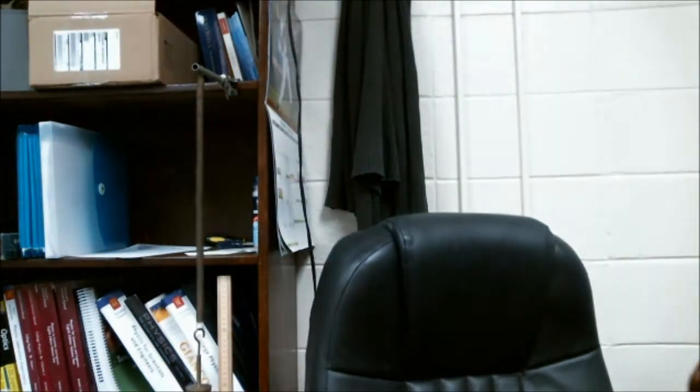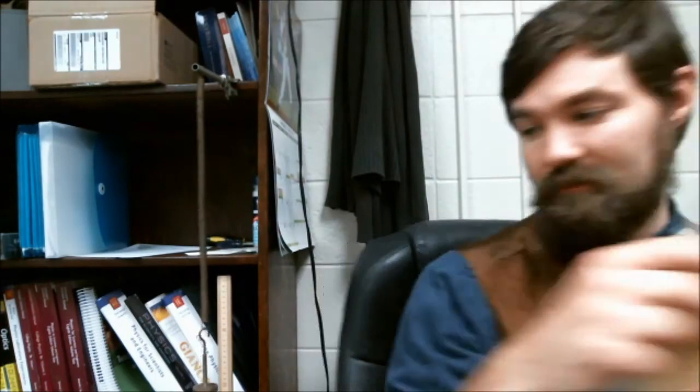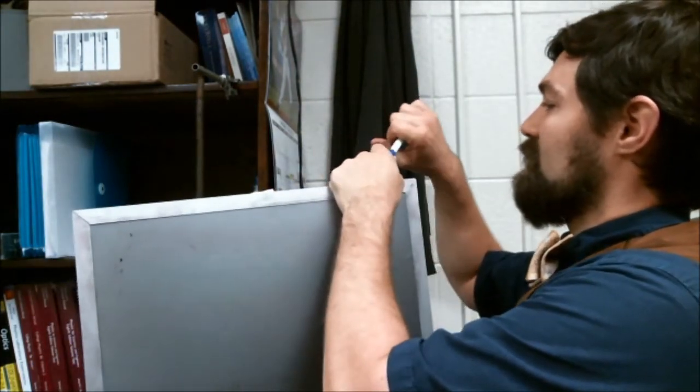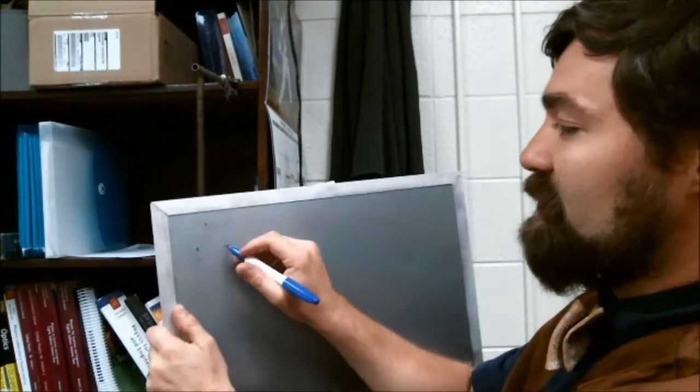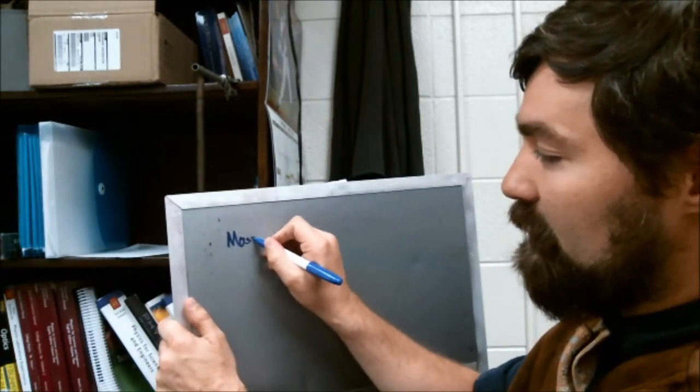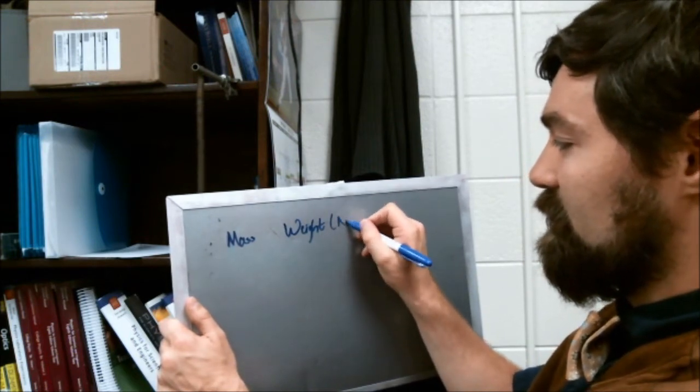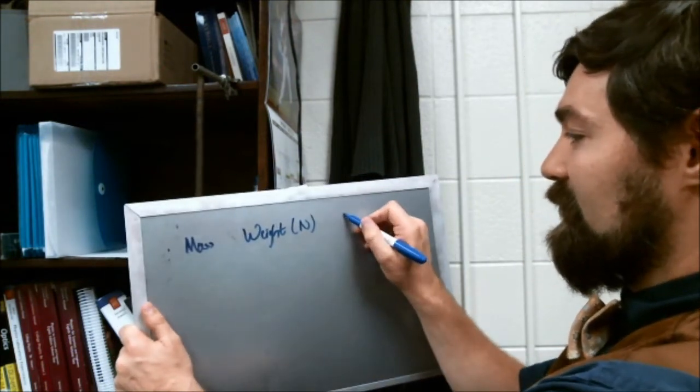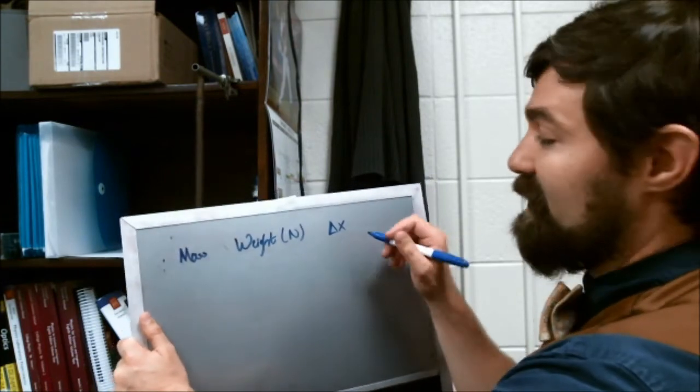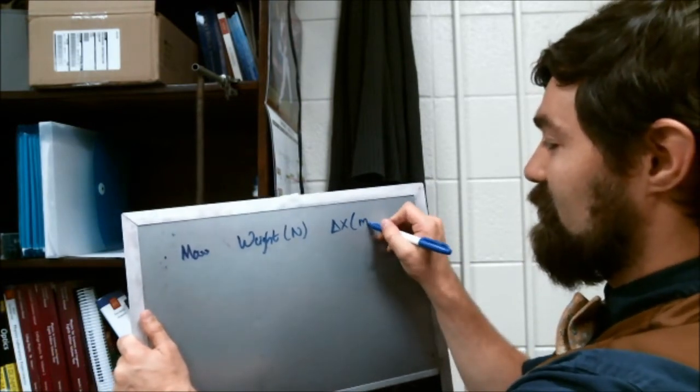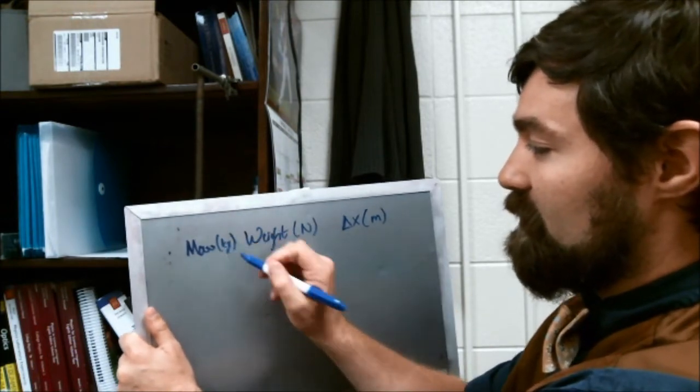So you would make a little data table, something like this. You can add how much mass you've added, how much weight that's equivalent to in newtons, and how much this spring has stretched. That should be in meters. This is in kilograms.